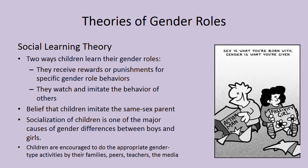Social learning theory declares that there are two ways children learn their gender roles: they receive rewards or punishment for specific gender role behaviors, and they watch and imitate the behavior of others. The belief is that children imitate the same-sex parent — little girls hang out with mom and little boys hang out with dad. Socialization of children is one of the major causes of gender differences between boys and girls. Children are encouraged to do gender-appropriate activities by their families, peers, teachers, and the media.